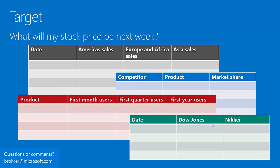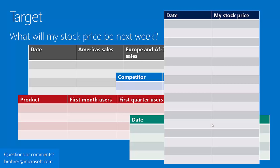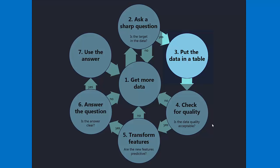You need to make sure your data includes your target. Your target is an example of answers to your question from the past. If your question is 'what will my stock price be next week?' your target is a history of stock prices. You can gather sales information by region, competitor data, user information, and external market data — but none of that will help answer your question until you also have a history of your stock price to line it up with and find patterns.